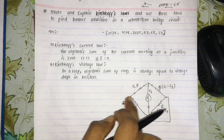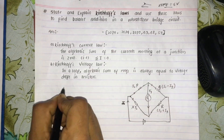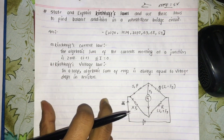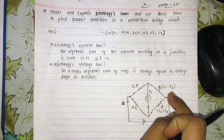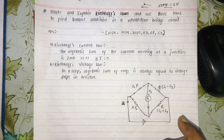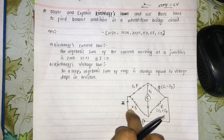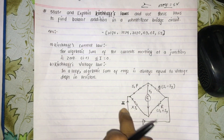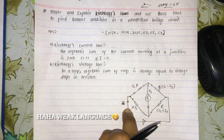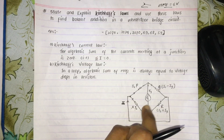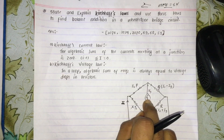The total current I is equal to I1 plus I2. The experimental set-up for the Wheatstone bridge is shown in the figure, where P, Q, R are the known resistances and X is the unknown resistance. I is the current flowing in the circuit. I1 is the current flowing through P, I2 is the current flowing through X, G is the galvanometer, and IG is the current flowing through the galvanometer.